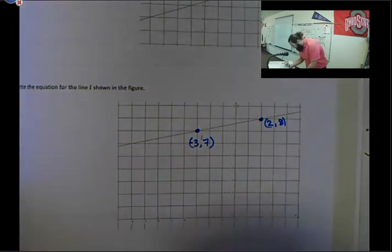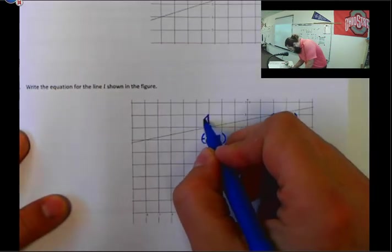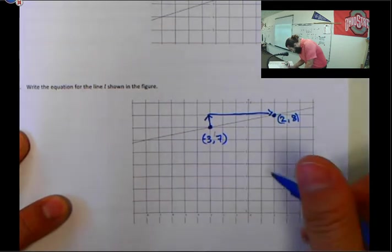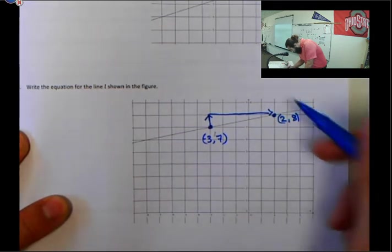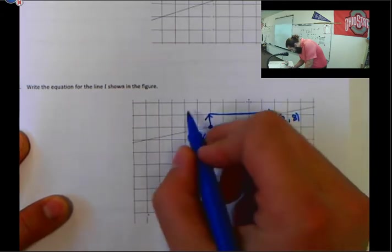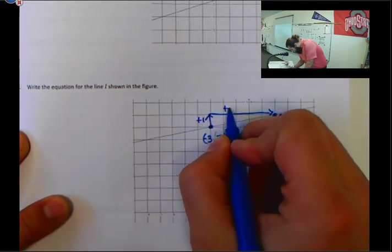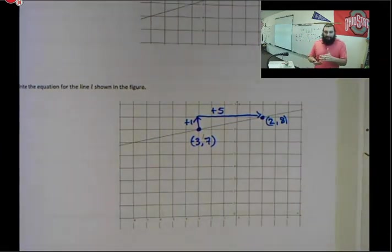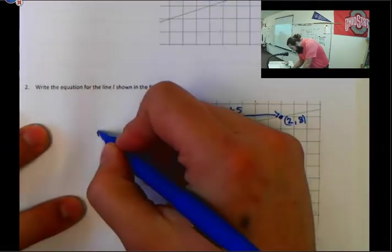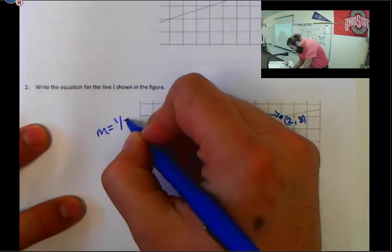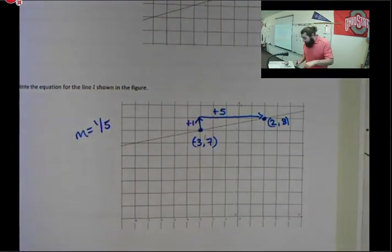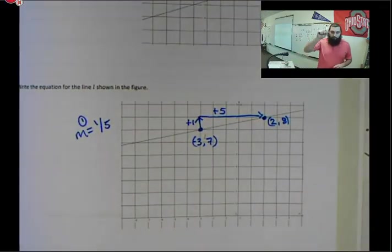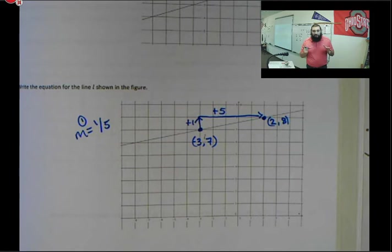I'm going to use the point at (2, 8) and the point at (-3, 7). From here, we're going to find the slope. To get from this point to our next point, we go up one and to the right five. So, our slope m is equal to one-fifth. Put a little circle with a 1 for step number one: find your slope.